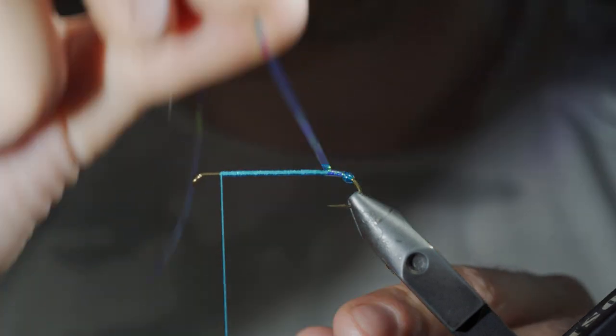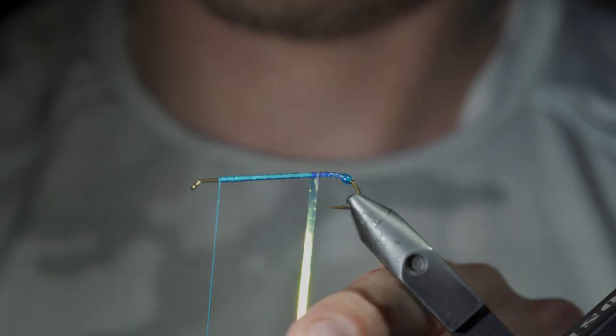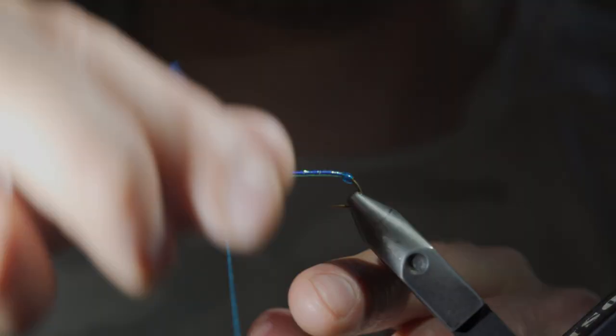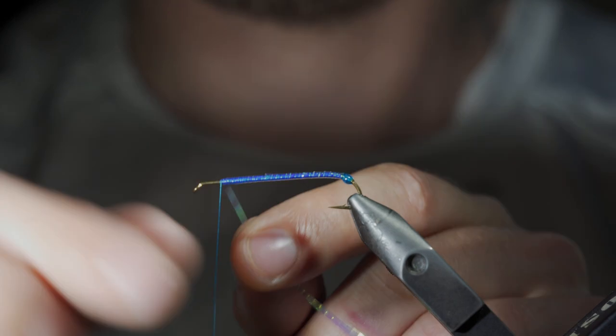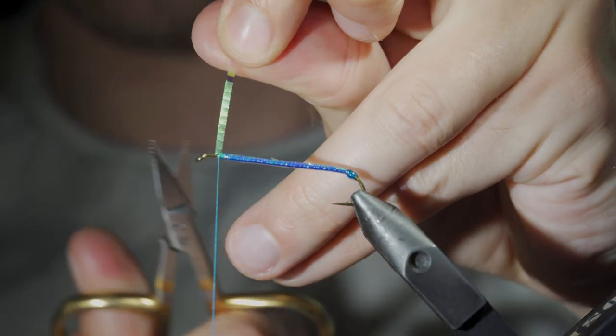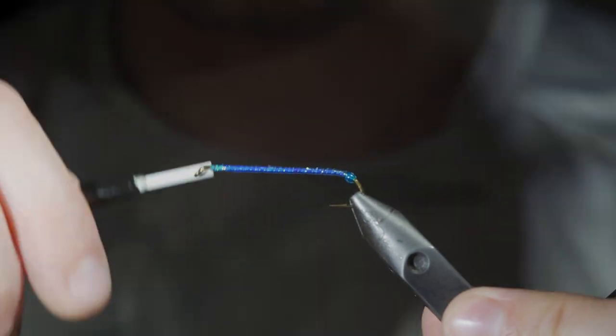Once our thread reaches the head of the fly, we'll grab our lateral scale and begin to wrap it forward in closed touching spirals, doing so until we reach our thread. At which point, we'll secure it in place with our thread and snip the excess free, wrapping back on it slightly.